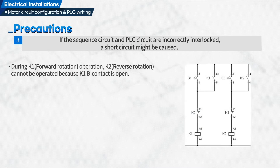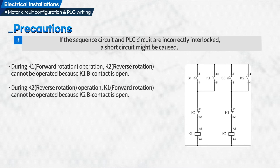During K1 forward rotation operation, K2 reverse rotation cannot be operated because K1 B contact is open. This describes the interlock circuit configuration.